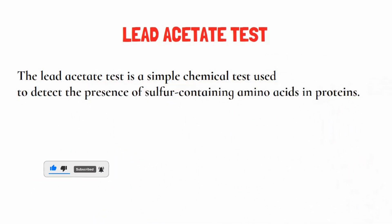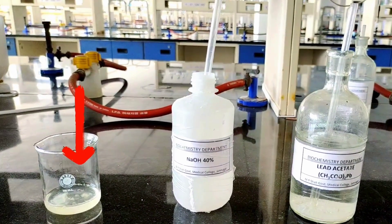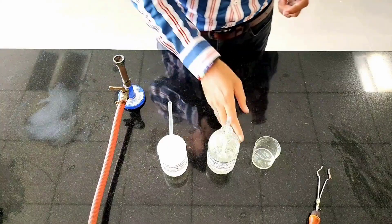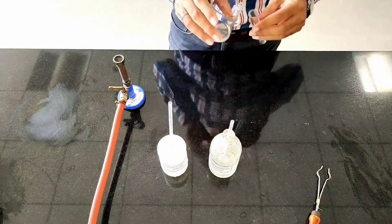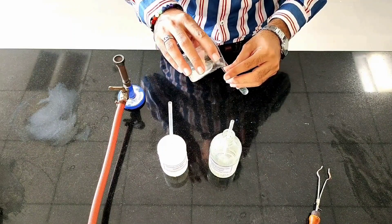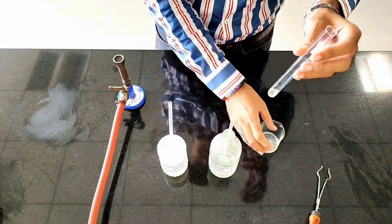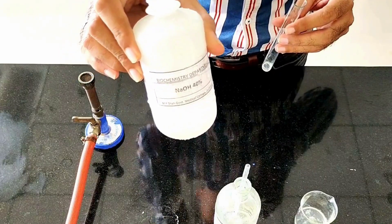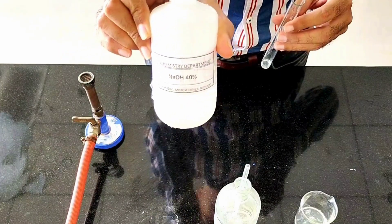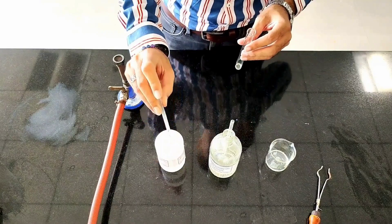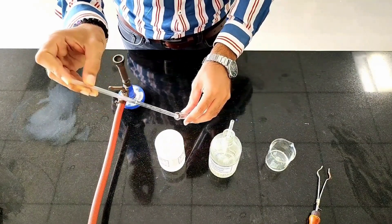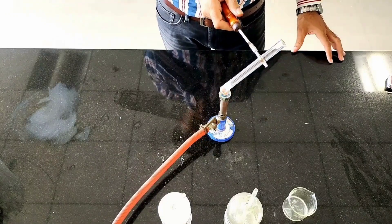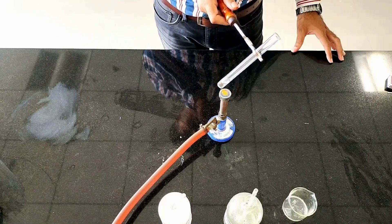For this we require protein solution, 40 percent NaOH, and lead acetate. First we will take one ml of protein solution, then add one ml of 40 percent NaOH. Then we will boil it — this will hydrolyze the protein, meaning breakdown of peptide bonds.